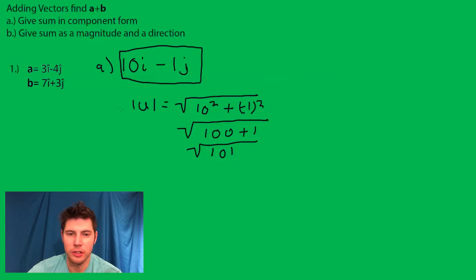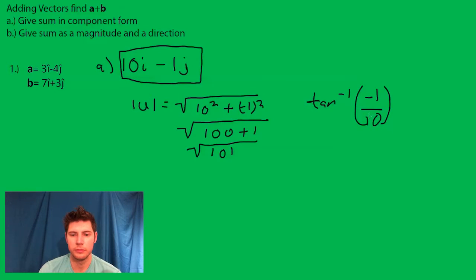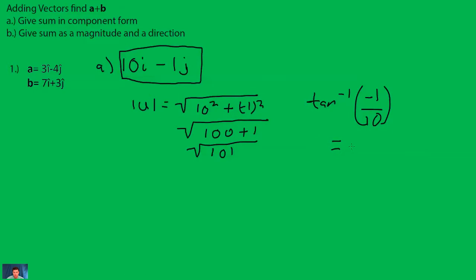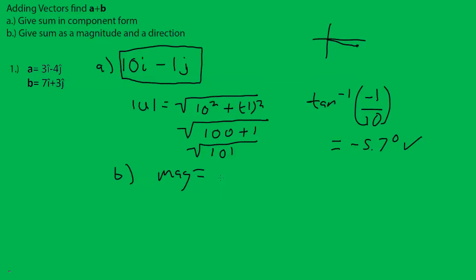Then to find the direction, you do tangent inverse of negative 1 over 10, which is equal to negative 5.7 degrees. Right after you do this, you want to check your quadrant. So 10i minus j is down here, so negative 5.7 makes sense. This would be written as magnitude equals square root of 101, and the direction is negative 5.7 degrees.